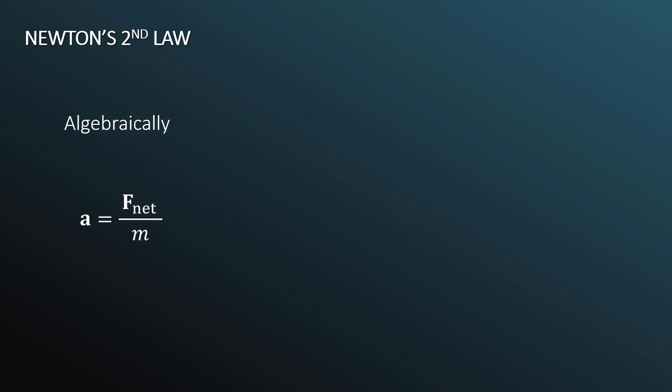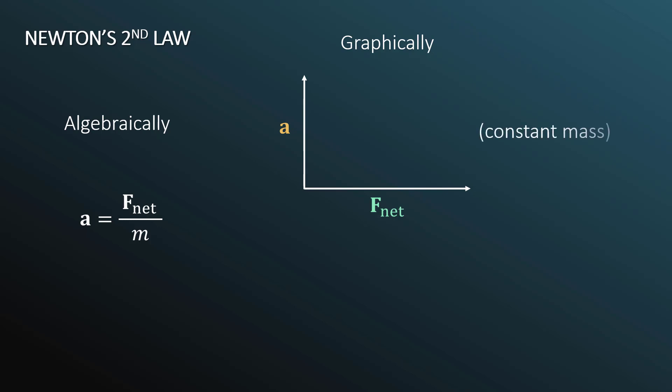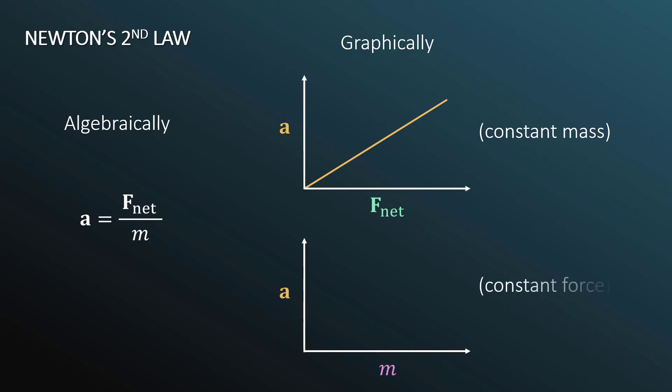Let's look at this relationship graphically. On the horizontal axis we have the net force, and on the vertical axis we have the acceleration. For a system of constant mass, it's a proportionally linear relationship — the more force applied, the greater the acceleration. For acceleration versus mass at constant force, the more mass added to a system, the lower the acceleration. So acceleration is directly proportional to net force, and inversely proportional to mass.